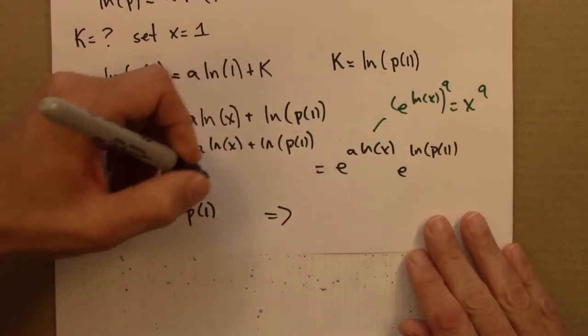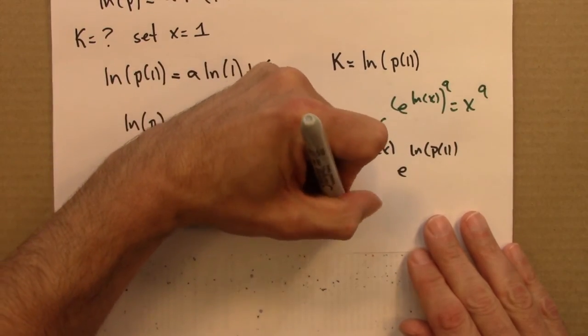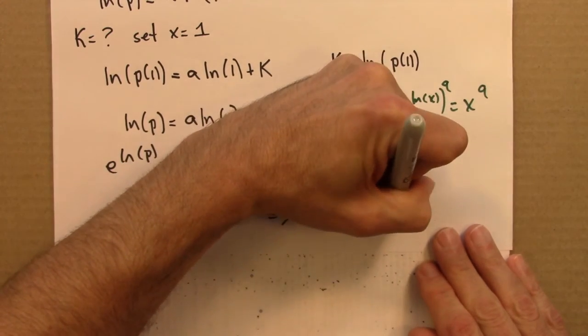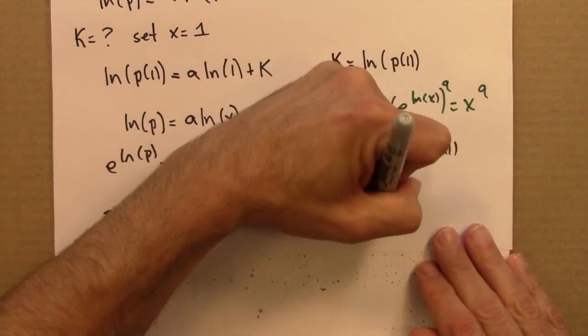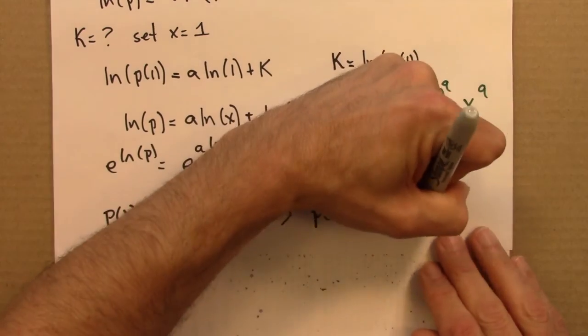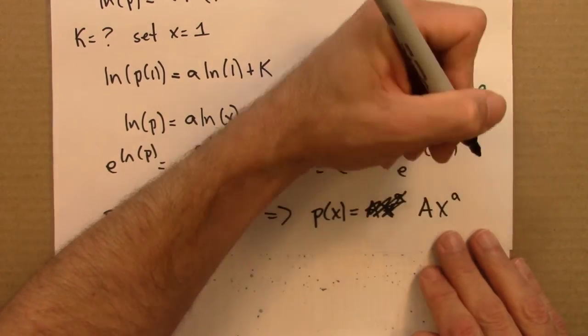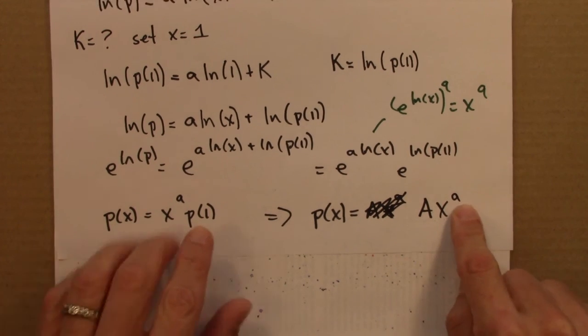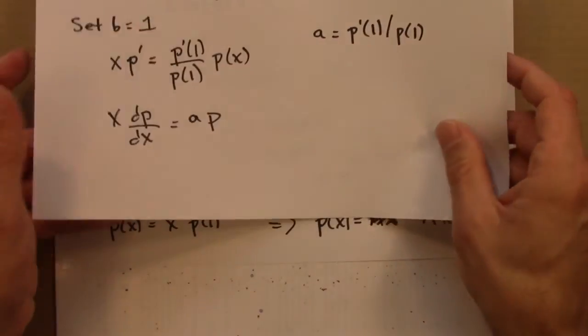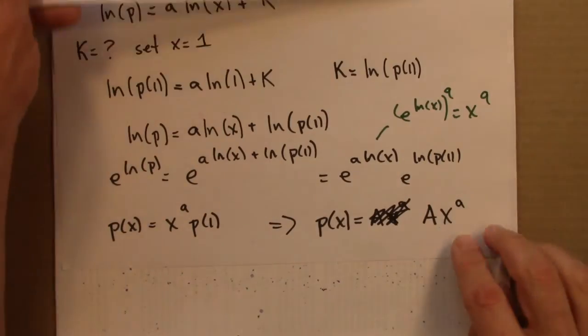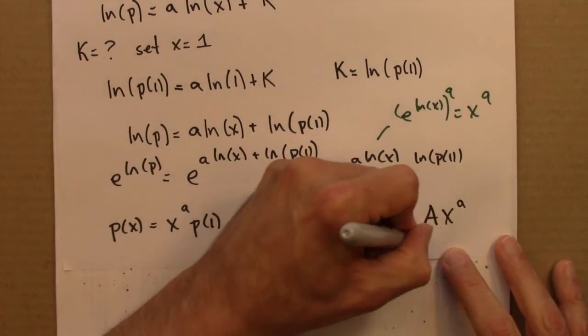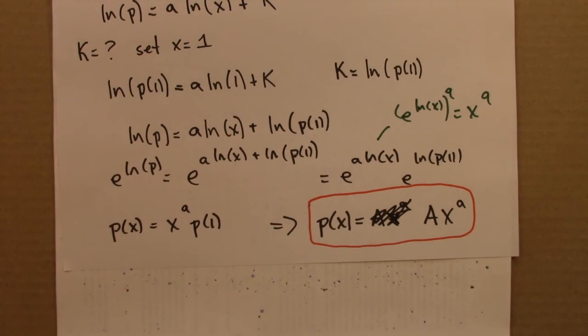And so what we have is something of the form A x to the a. So capital A, that's P1. Lower case a, that's this. But the main thing to conclude from this is that we get a power law.